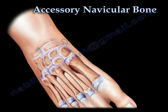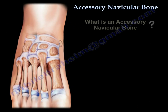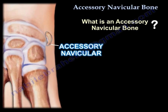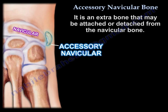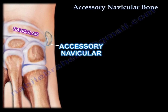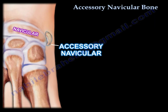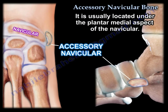Accessory Navicular Bone. What is an accessory navicular bone? It is an extra bone that may be attached or detached from the navicular bone. It is considered a normal variant present in up to 10% of people. This accessory bone is usually located under the plantar medial aspect of the navicular.